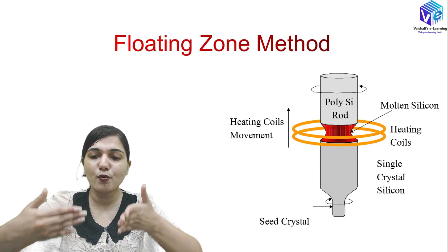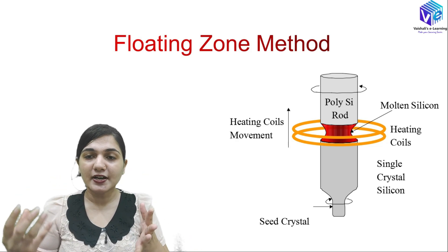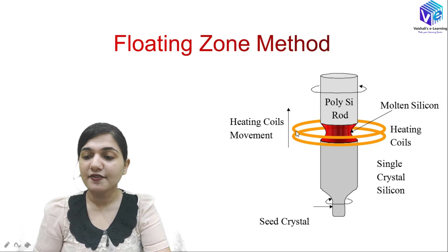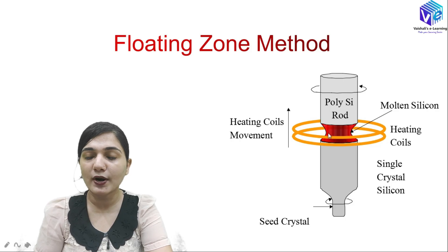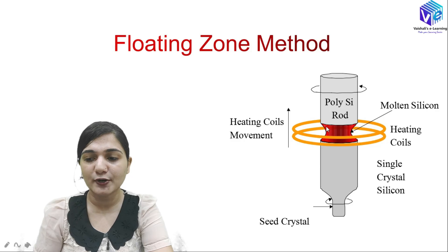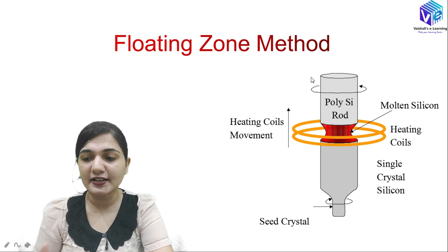As we are moving the coils, the temperature will be changing. The molten silicon will be converted into solid silicon. The heating coil will be continuously moving upward — when it moves upward, the temperature here comes down below the melting point and the silicon starts solidifying. Starting from the very beginning and moving upward towards the end, this is how we convert the full polysilicon into single crystal silicon.